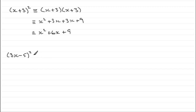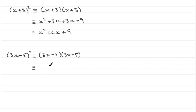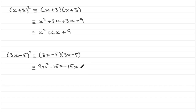For this example we'll again put the two brackets out: 3x minus 5 times 3x minus 5. We get 3x times 3x which is 9x squared, then 3x times minus 5 which is minus 15x, and we get another minus 15x here.